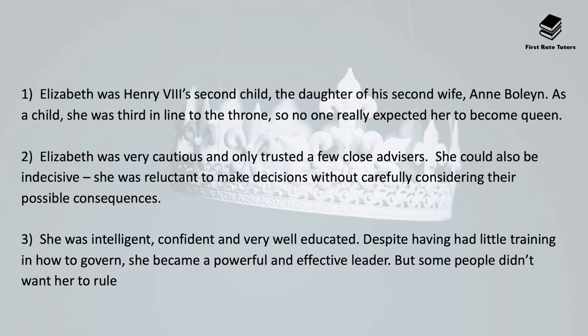She was Henry the Eighth's second child and the daughter of his second wife Anne Boleyn. As a child she was the third in line to the throne, so no one really expected her to become Queen. She was really cautious and only had a trusted few close advisors. She could also be indecisive and was reluctant to make decisions without carefully considering their possible consequences. During her reign however she was intelligent, confident, and really well educated despite having little training in how to govern, as she was third in line for the throne. In spite of that she became a powerful and effective leader.